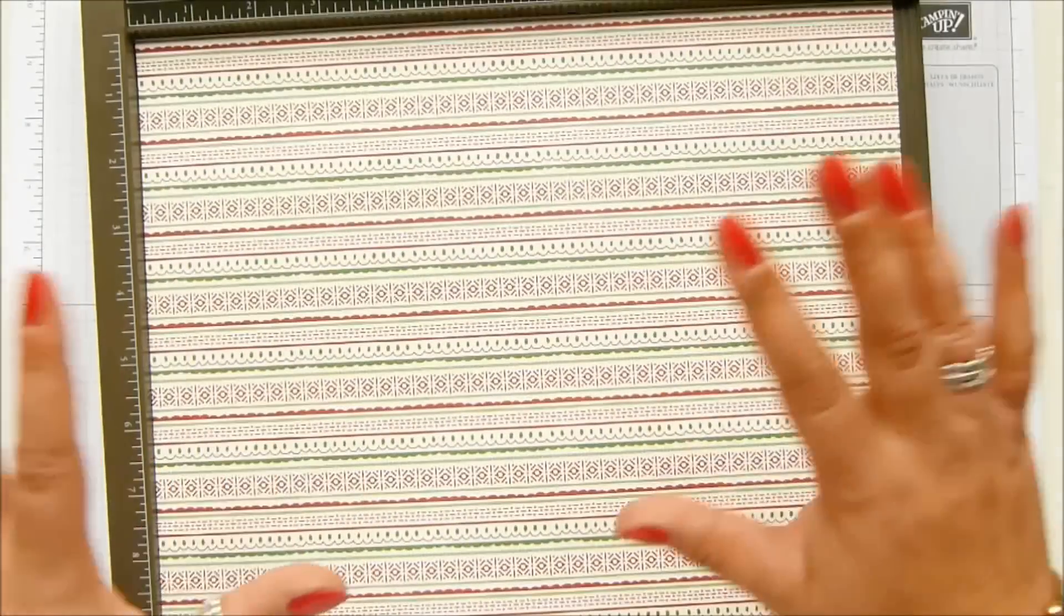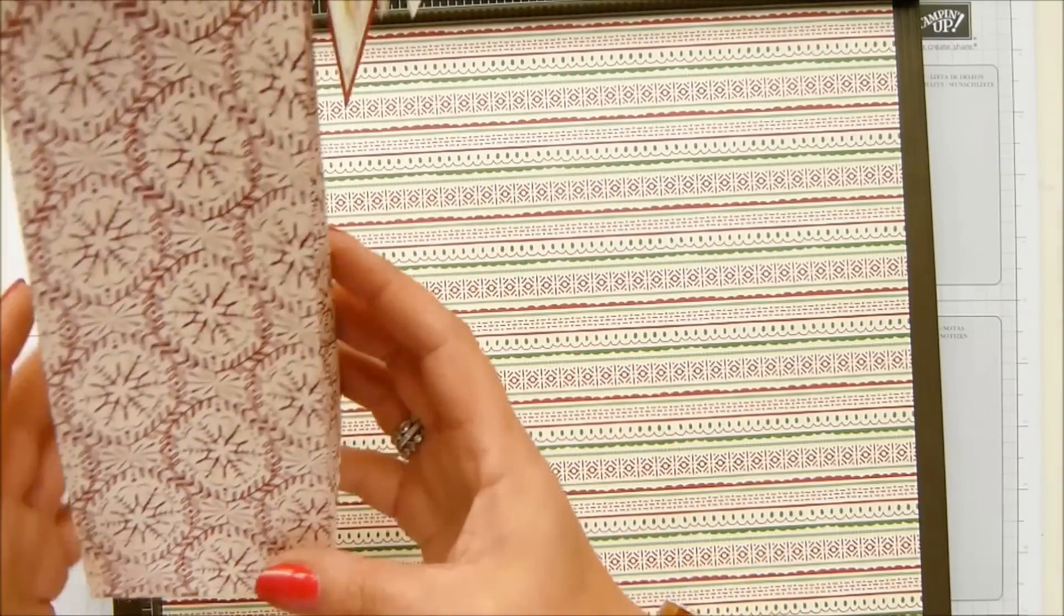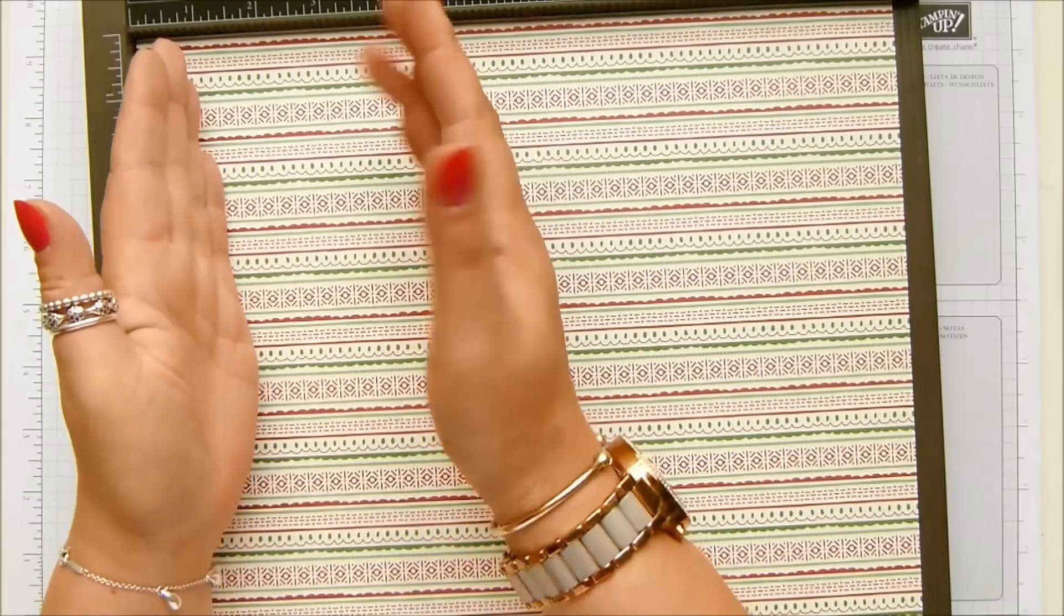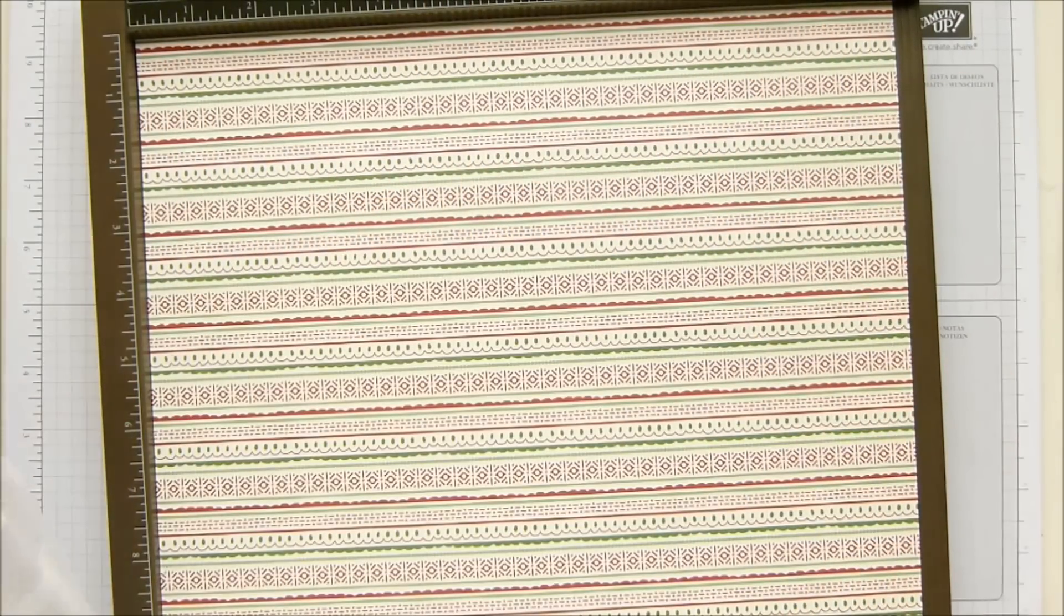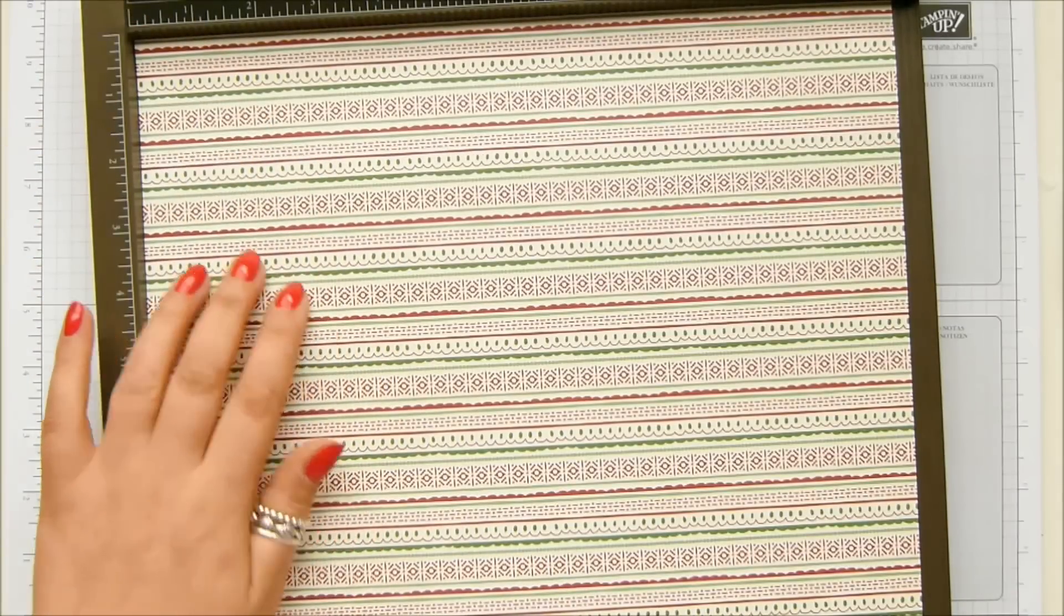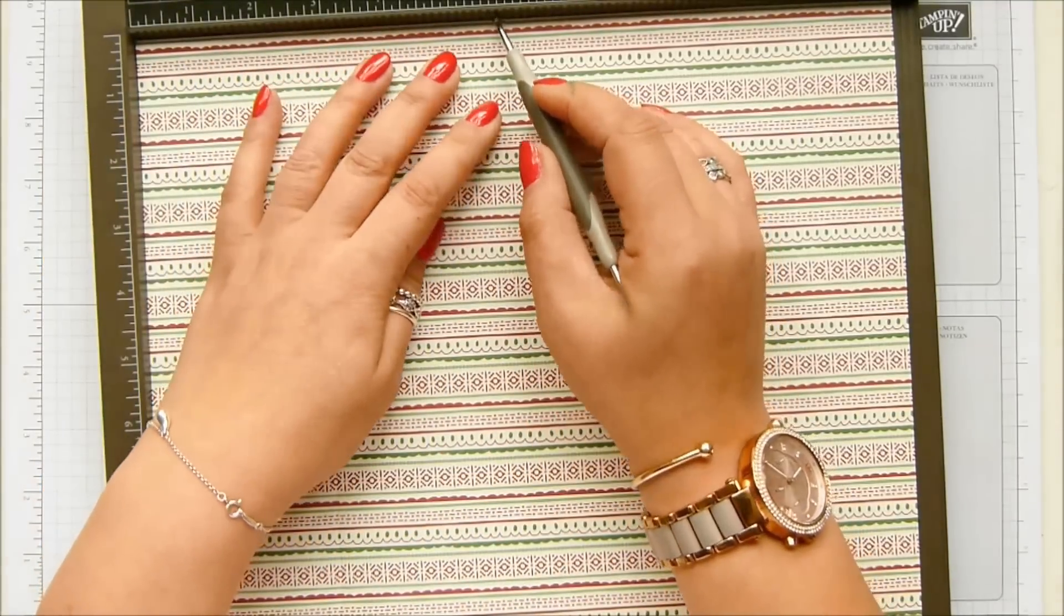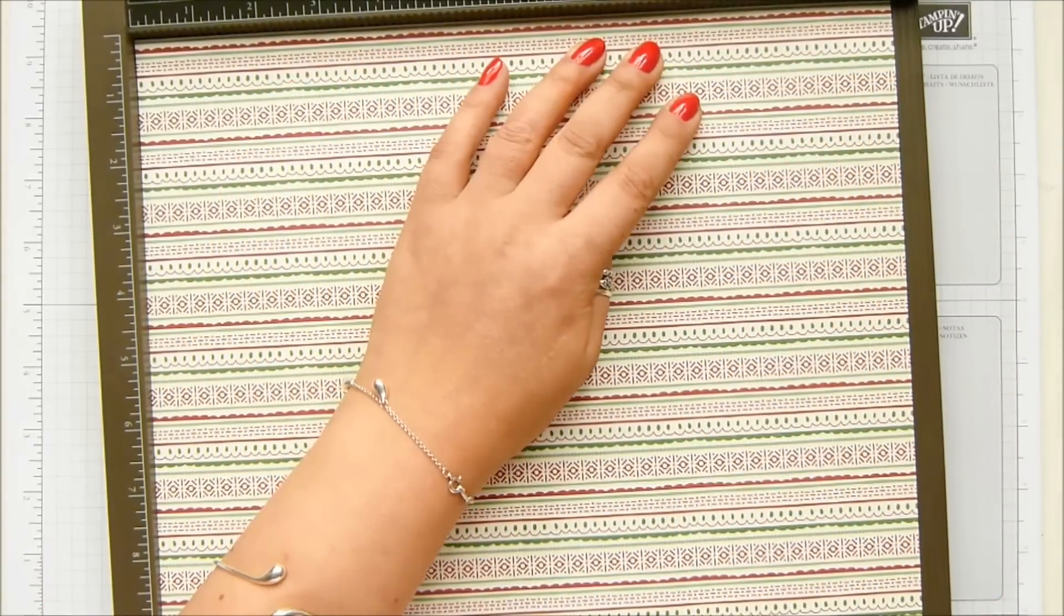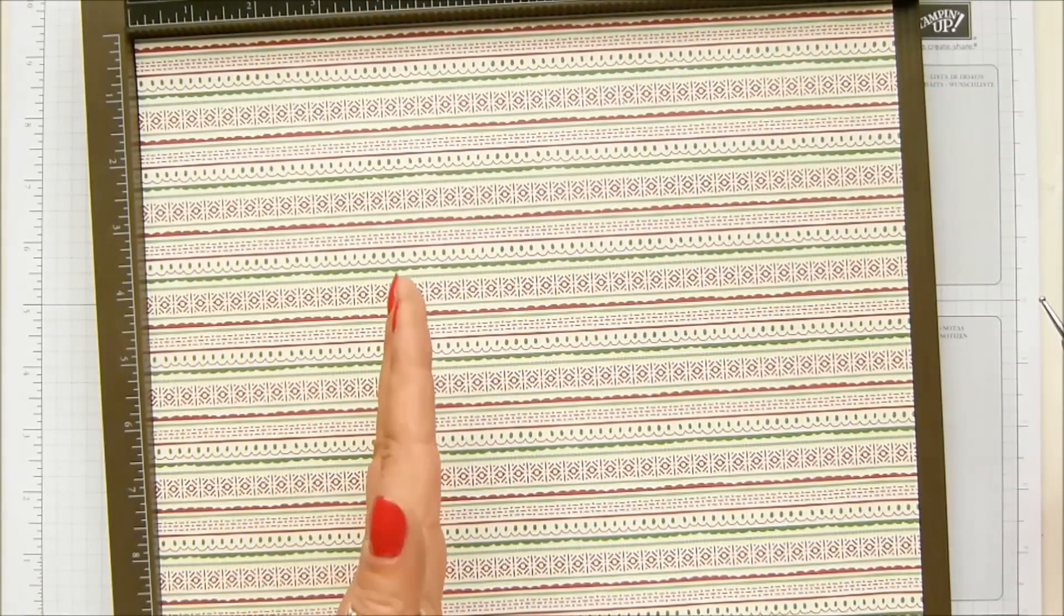So it depends. Depending on which way you want your pattern to go will determine where you lay your paper. So I would like my scallops like that visually down. So I'm putting this way at the top. So my score lines, and I've got everything written down for you on my blog. So link in the description bar. So we're going to score at two and seven eighths of an inch, five and three quarters, eight and five eighths and 11 and a half inches, which in metric slightly easier, seven, 14, 21, and 28.